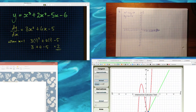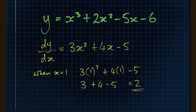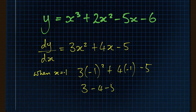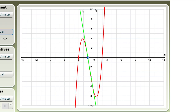If instead I feed minus 1 into my gradient function, I should get a much steeper and negative gradient. When x equals minus 1, we get 3 lots of minus 1 squared plus 4 lots of minus 1 minus 5, so that's 3 minus 4 minus 5, which gives us minus 6 overall. That's the gradient — and as expected, it's negative and much steeper, a gradient of minus 6.